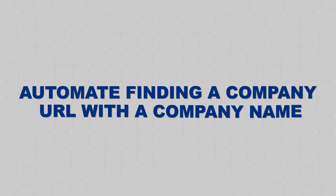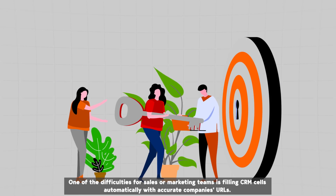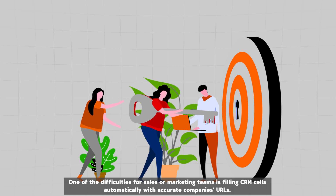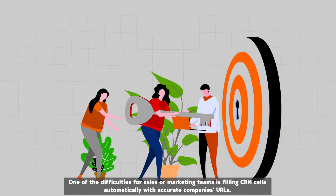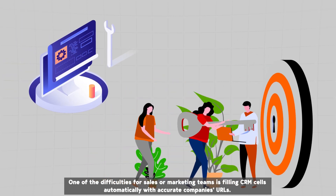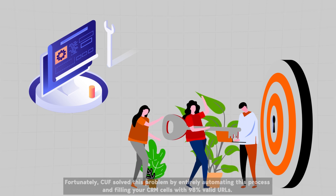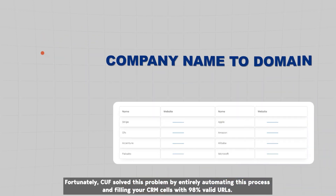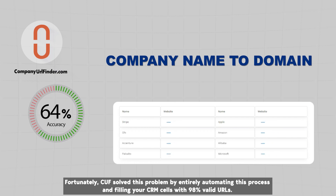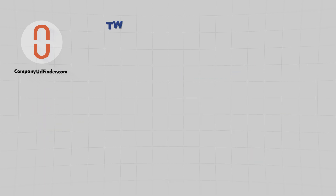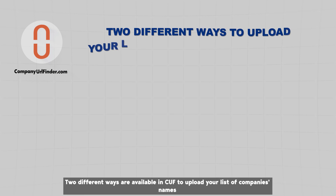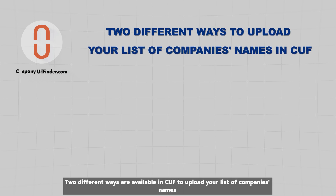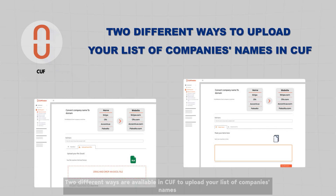Automate finding a company URL with a company name. One of the difficulties for sales or marketing teams is filling CRM systems automatically with accurate company URLs. Fortunately, CUF solved this problem by entirely automating this process and filling your CRM with 98% valid URLs.